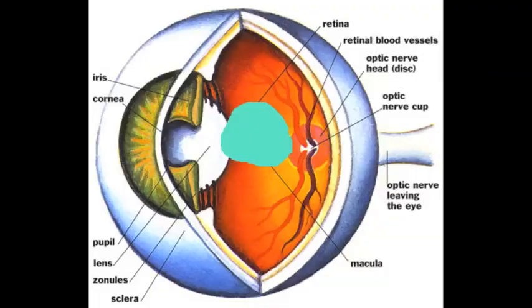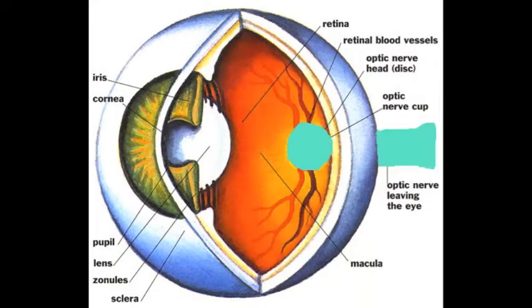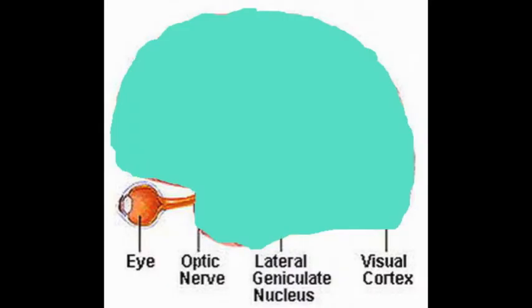Visual field defects can come from a multitude of different diseases or problems of the macula, the peripheral retina, the optic nerve, or the brain. And the way the defects manifest themselves,